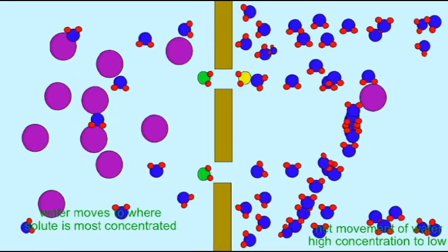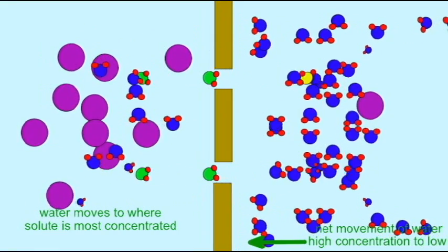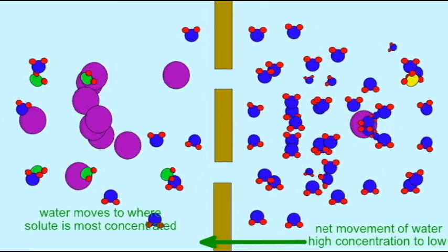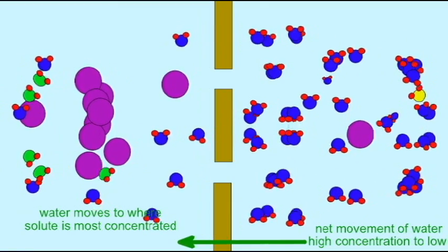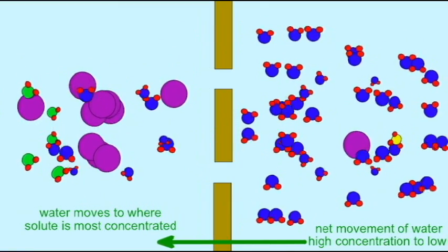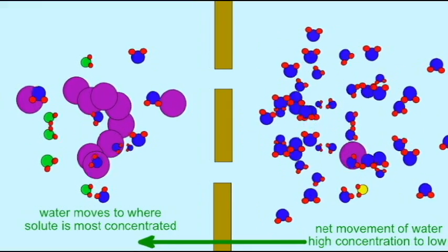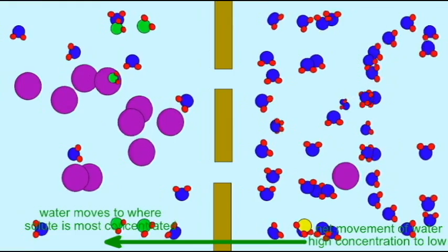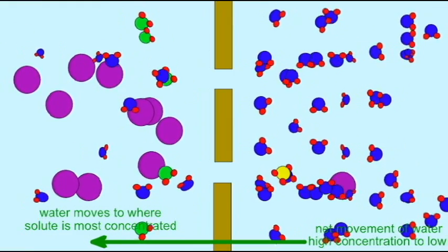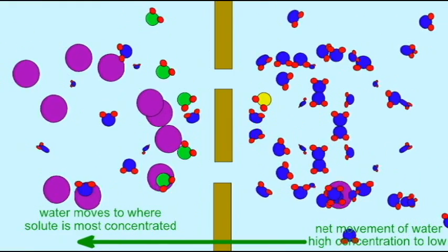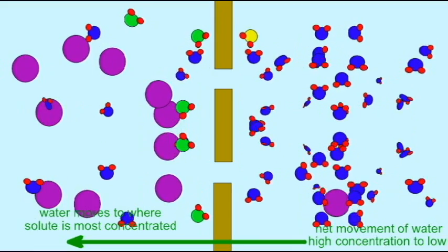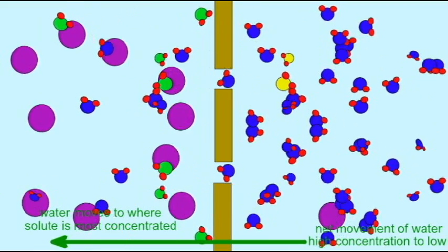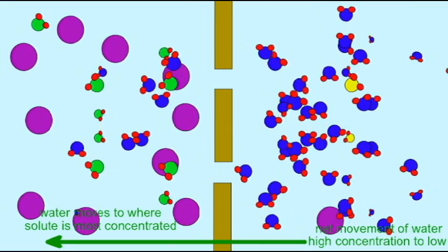That point is also illustrated here because I allowed the water molecules to change color as they go from one side of the screen to the other through this semi-permeable membrane. So note that while water is free to pass from one side to the other, we see a greater percentage moving from the area of high concentration to low, and so therefore there is a net movement of water to where the solute is most concentrated. This is osmosis.